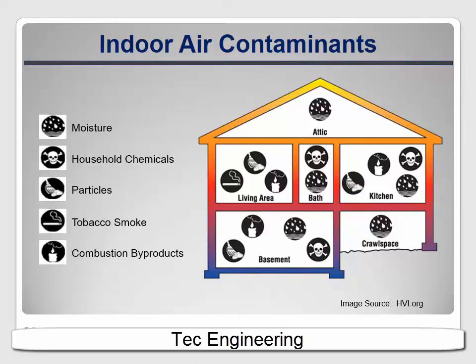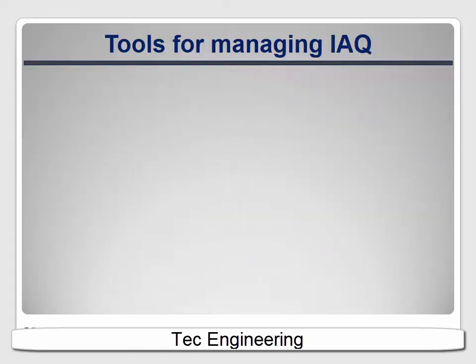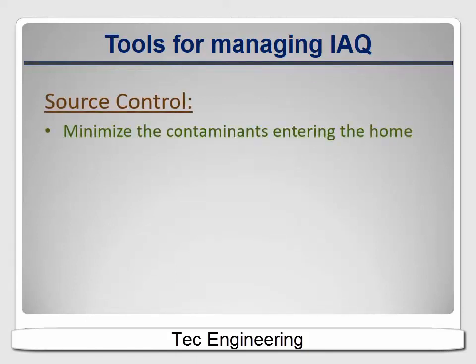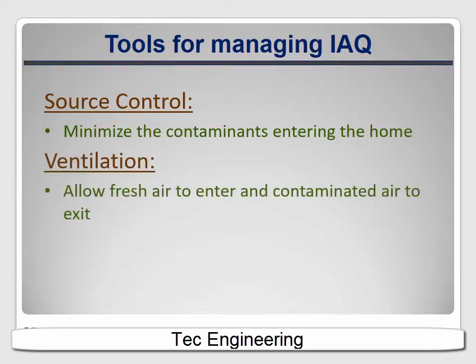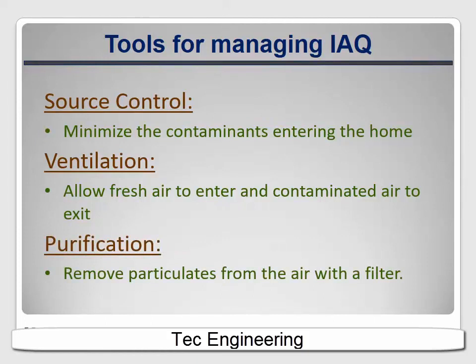So how do we keep the level of these contaminants low enough that they're not objectionable or unhealthy? Basically, it comes down to some simple concepts. First, we try to minimize the amount of them that get into the air in the first place — we call that source control. Then, if they do get into the air, we remove some of that air from the house and replace it with fresh outdoor air — we call that ventilation. And finally, we can attempt to remove particulate from the air — we call that air purification or filtration.